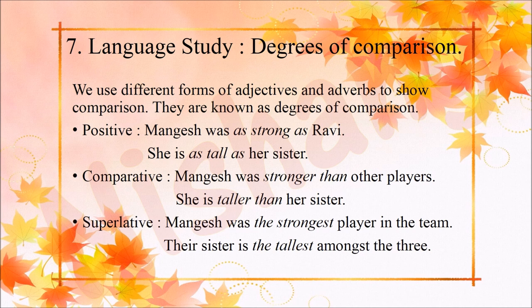The Comparative and Superlative degrees: Mangesh was the strongest player in the team. Their sister is the tallest among the three. In the superlative, we compare one with a whole group.